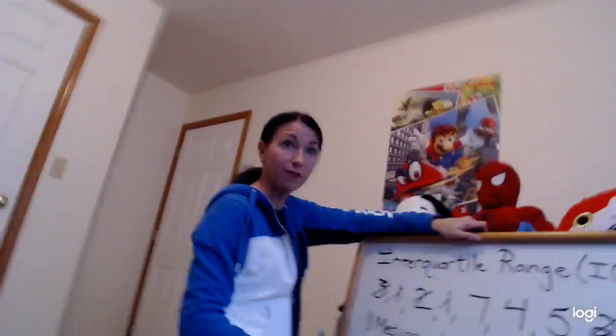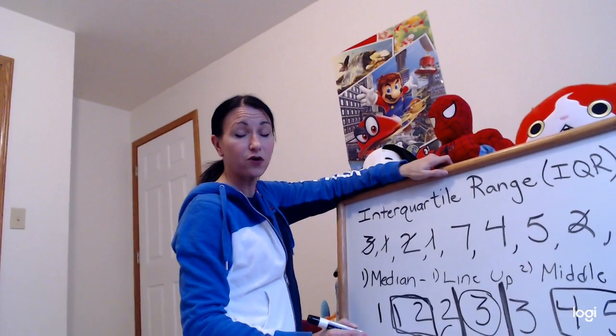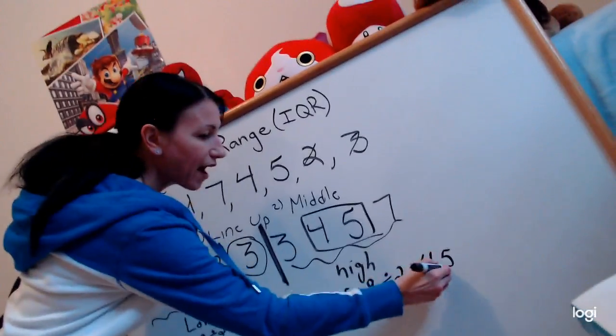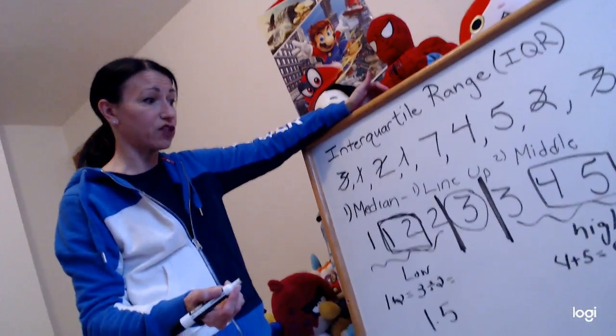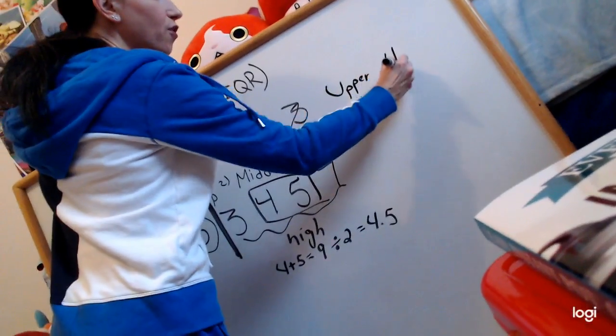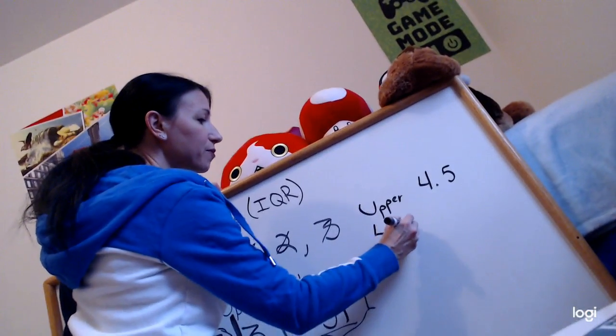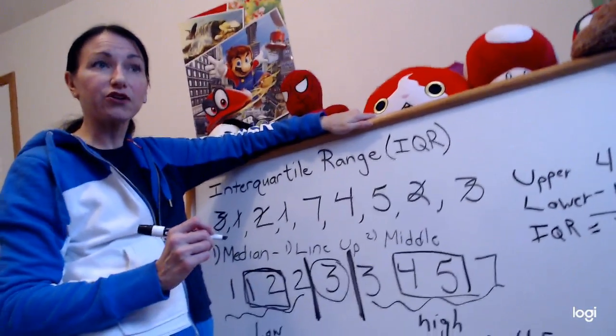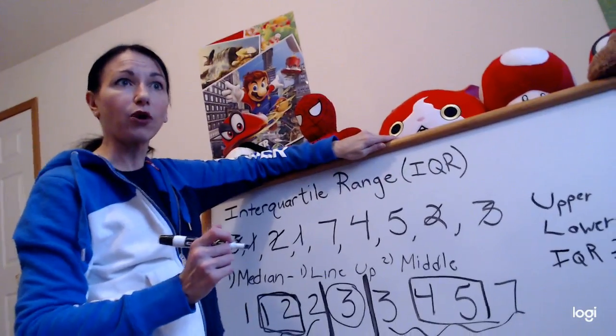Now I do the same with the upper group. Three, four, five, seven — four and five are in the middle. Add them together and divide by two: four plus five is nine, nine divided by two is 4.5. Now I just find the range: upper 4.5 minus lower 1.5 equals three. My interquartile range, or IQR, is three — there are three hours between the upper and lower playing video game times.